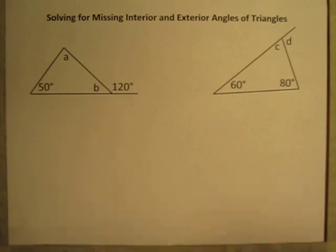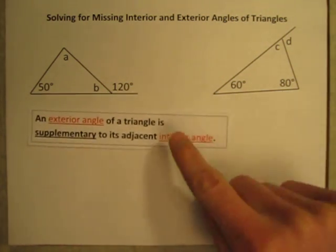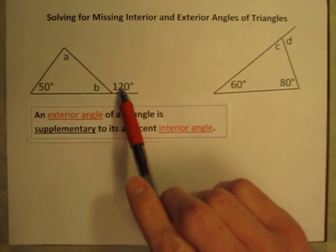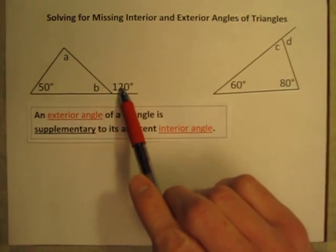The first one is this one here, and that is that an exterior angle of a triangle is always supplementary to its adjacent interior angle. What that means is this 120 degree angle is an exterior angle.